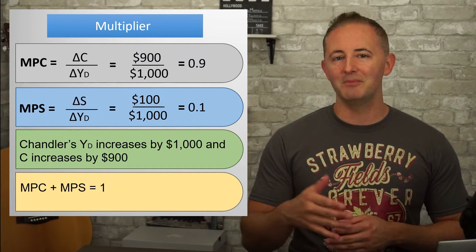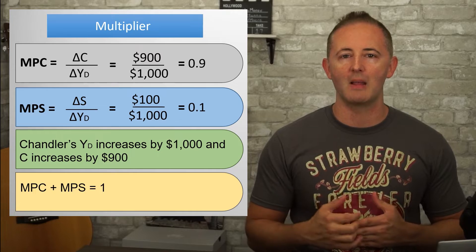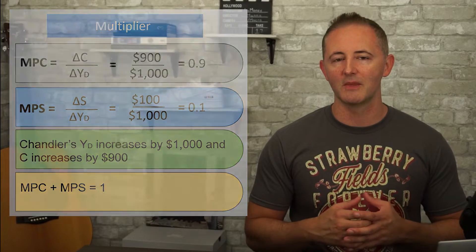Now that we know Chandler's MPC, we can say that Chandler will spend 90% and save 10% of every additional dollar of disposable income he receives. But this is macro, so why are we focusing so much on one person's spending habit? The answer is that we're going to use this same concept and just apply it to everybody. So if we say that an economy has an MPC of 0.9, we're assuming that everybody in the economy will spend 90% of every additional dollar of disposable income. And remember, we want to know how much aggregate spending or GDP is going to increase by following an initial change in spending.